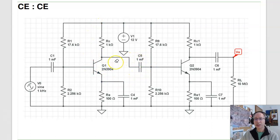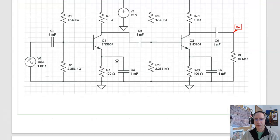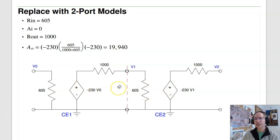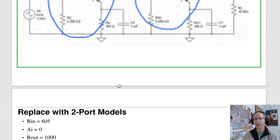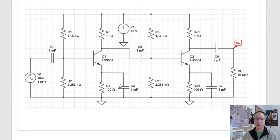This circuit is kind of intimidating to analyze. If I replace each stage with a two-port model, it's not nearly as bad. Replace the first stage with the common emitter model, replace the second stage with the common emitter model. Notice this is way easier to understand than the original circuit. That's why we use two-port models — it really helps in analyzing multi-stage amplifiers.